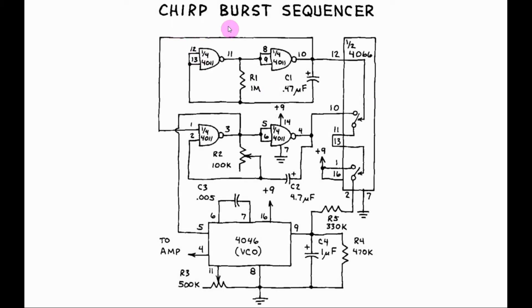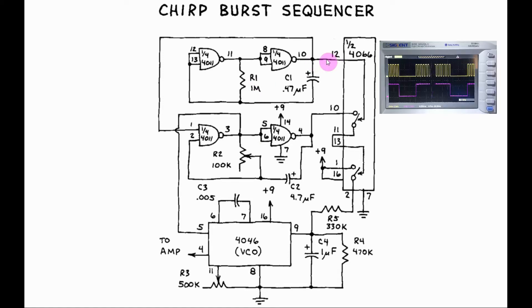Let's have a look at the chirp burst sequencer circuit. Here we have a Nangate astable multivibrator, generating at the output a low frequency clock signal.